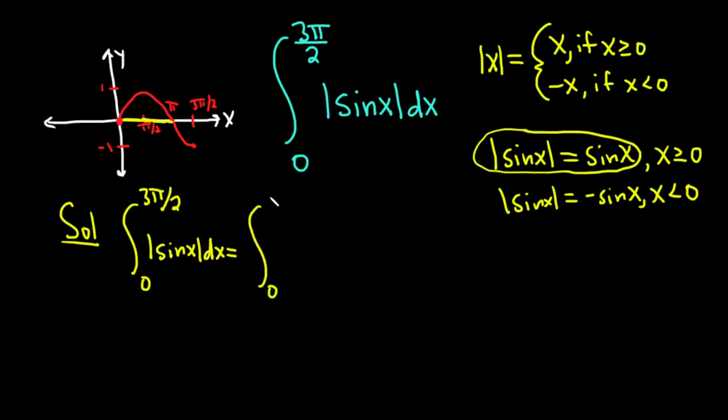So from 0 to pi, instead of the absolute value of sine of x, we can write sine x in the integrand. And then dx. This is called the integrand.